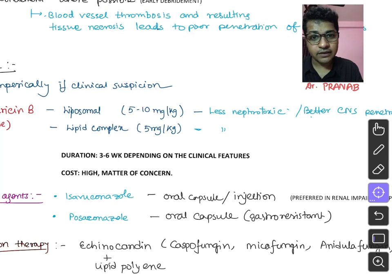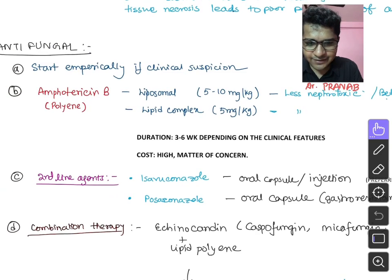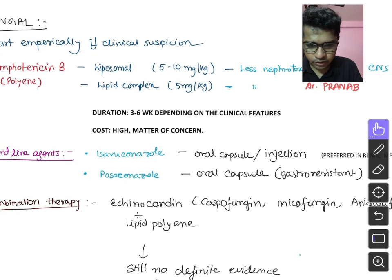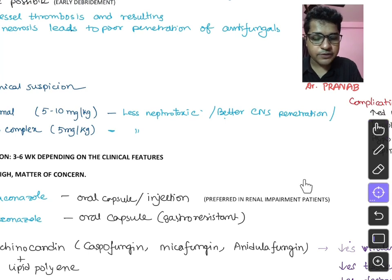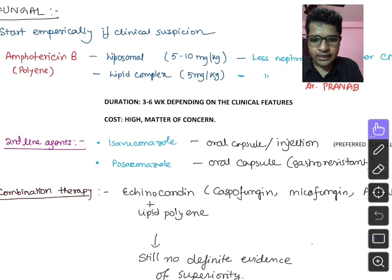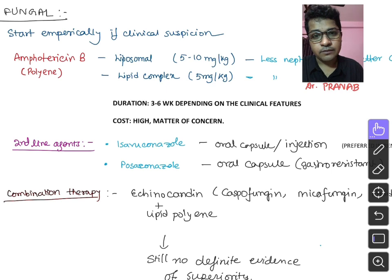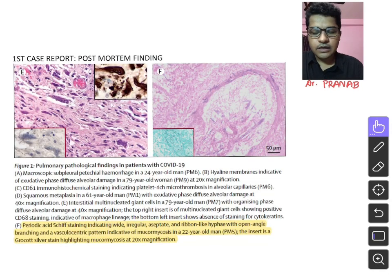Second-line agents include isavuconazole, available in oral capsule and injection forms, and posaconazole in oral capsule form. Isavuconazole is preferred in renally impaired patients where Amphotericin B cannot be given. Combination therapy with echinocandins and lipid polyenes like Amphotericin B has not yet been FDA-approved, as there is no definitive evidence of superiority of combined therapy.